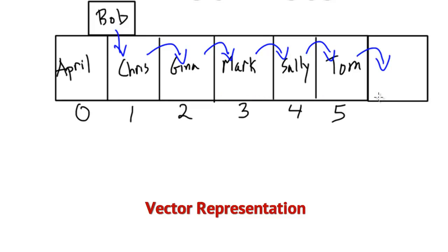The same idea applies to a delete operation, except we'd be going in the other direction. Say we wanted to delete Gina — we'd have to move Mark over, then Sally, then Tom, and any additional elements as well. So our work is dependent upon the number of contacts we have. But we can, in fact, reduce the amount of work for insertion and deletion so that it's independent of the number of contacts.